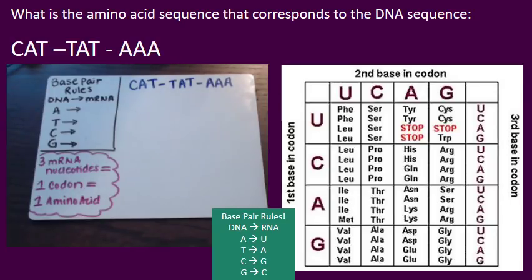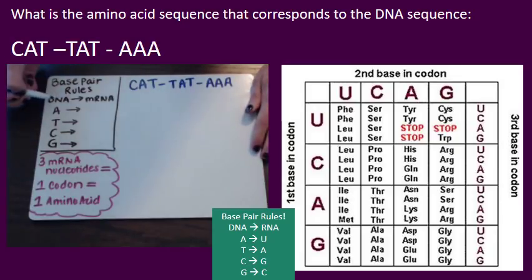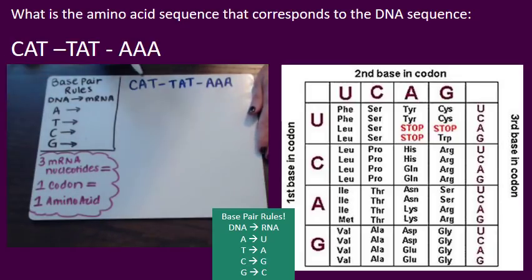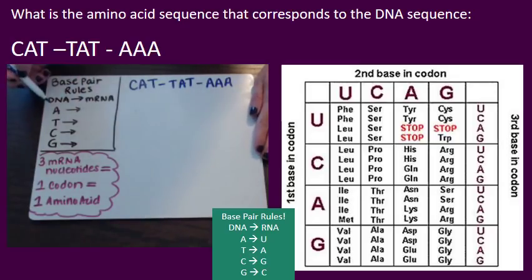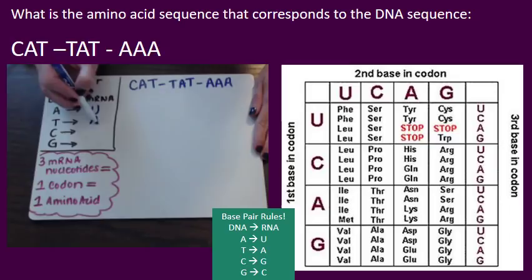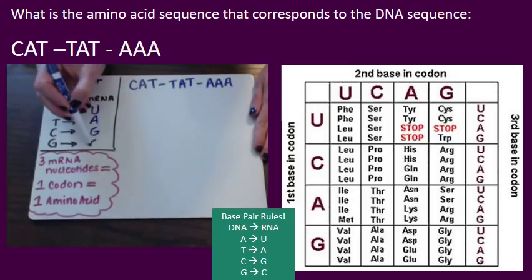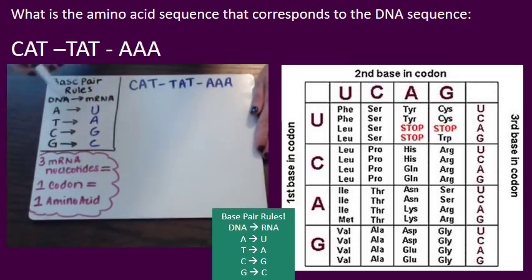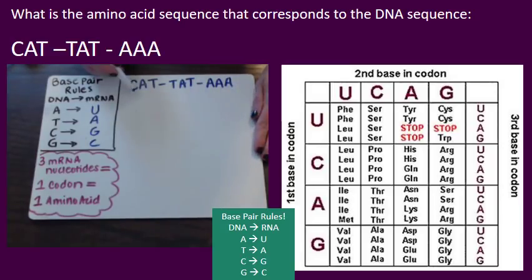The first thing we need to do is transcription. This is where we take DNA — which is what we're given; I know that from the T's — and we transcribe it into messenger RNA. So our base pair rules: A bonds with U, T bonds with A, C bonds with G, and G bonds with C. We're going to use those rules to build our messenger RNA strand.